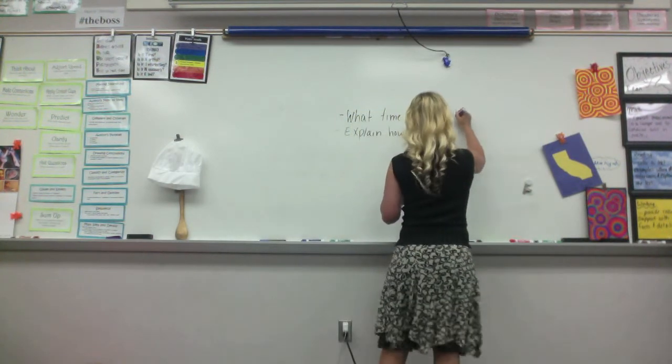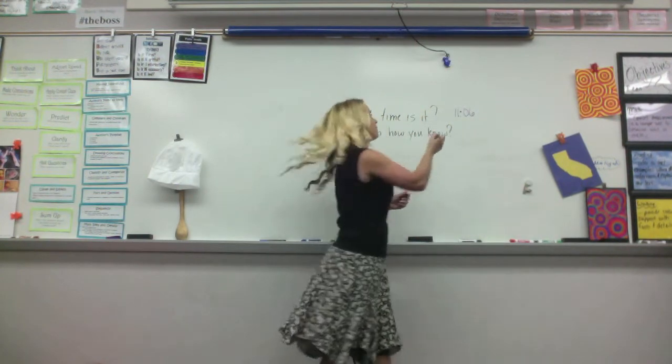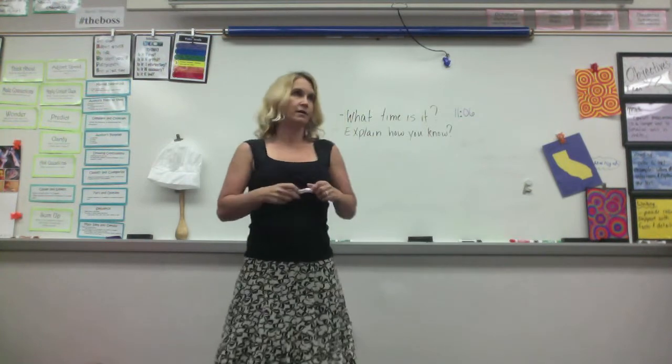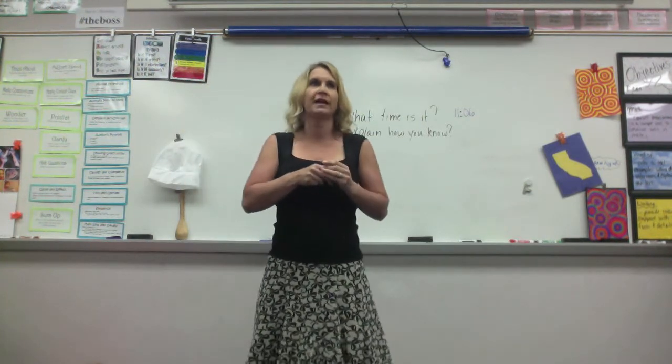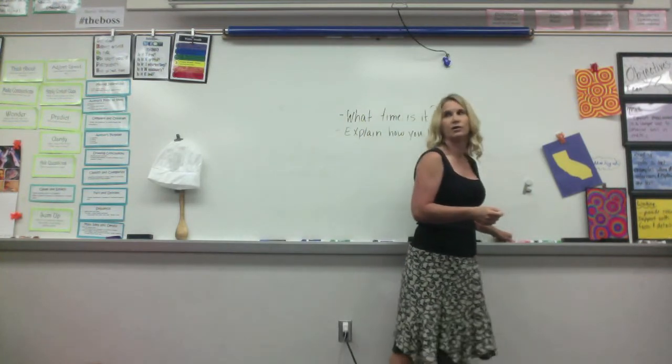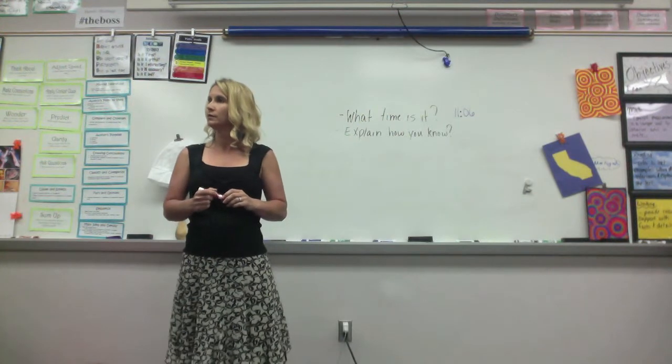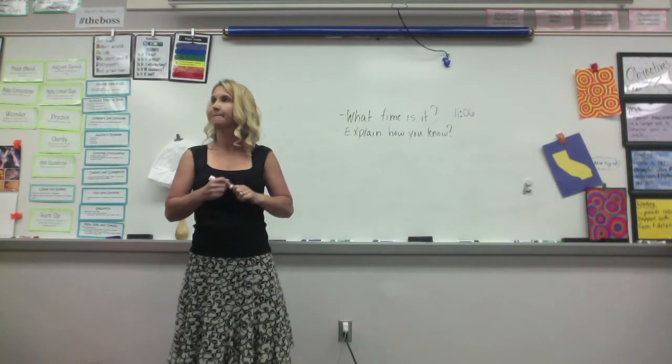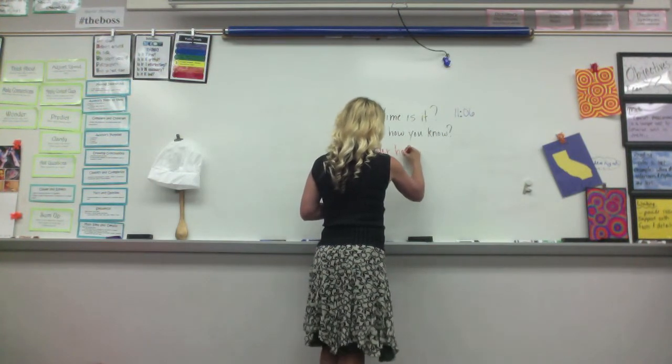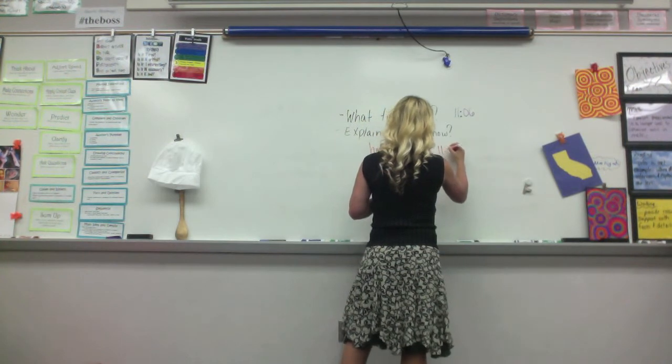Because when I looked, I saw 11:06, too. Okay, so we would write it like this. Explain how you know that the time was 11:06. How did you know, Tony? Because the hour hand was on the 11, and that makes 11, but then the minute hand was like on the little tiny dot six, and that makes six minutes.